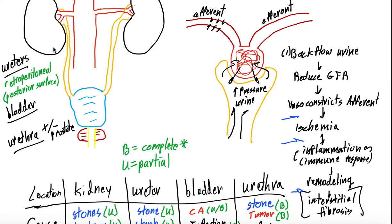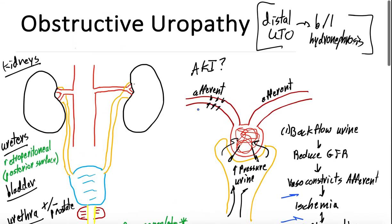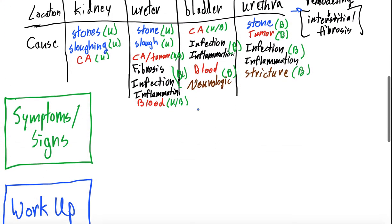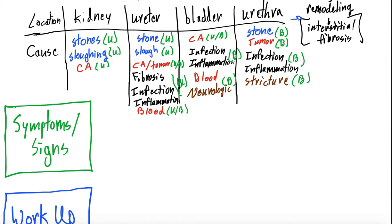If it's only a partial or unilateral obstruction, the other kidney can usually pick up most of the slack. If that other kidney has chronic kidney disease, you might see an elevated creatinine. But most of the time with a partial obstruction, you won't see acute kidney injury. Interestingly, there are usually not many symptoms — pain is kind of a late finding.